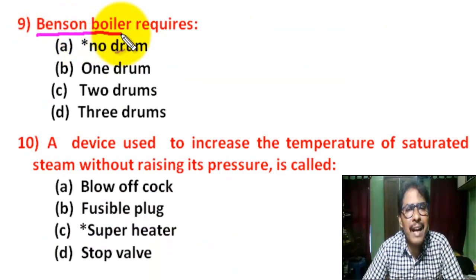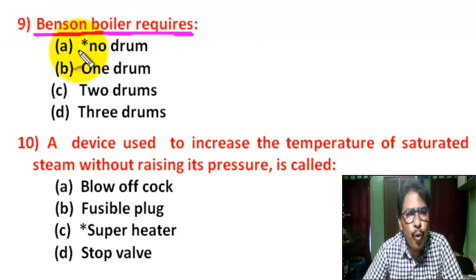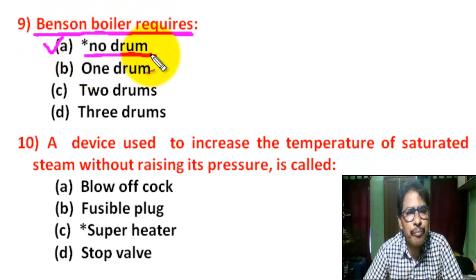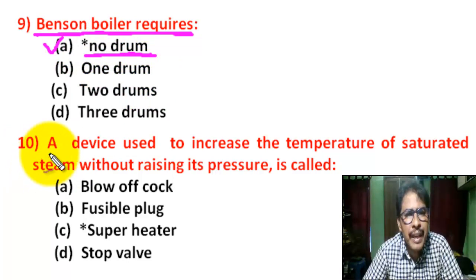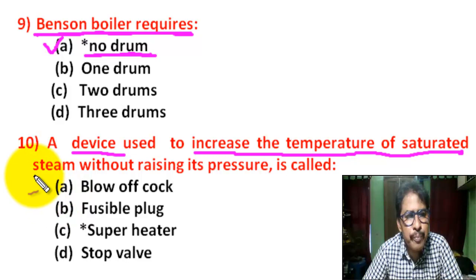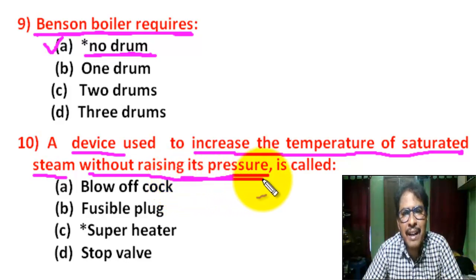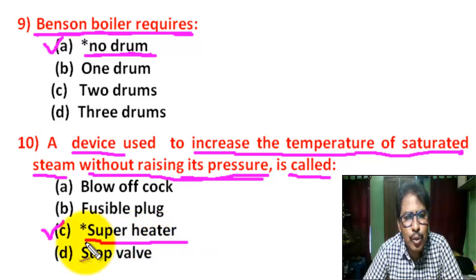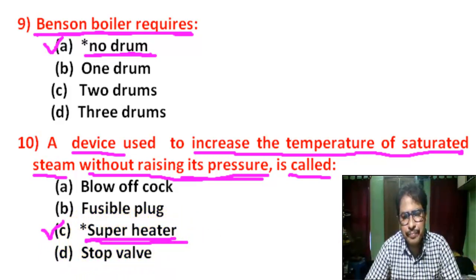Question number 9: Benson boiler requires — there are four options. Correct answer is A: Benson boiler requires no drum. Question number 10: A device used to increase the temperature of saturated steam without raising its pressure is called — there are four options. Correct answer is C: superheater.